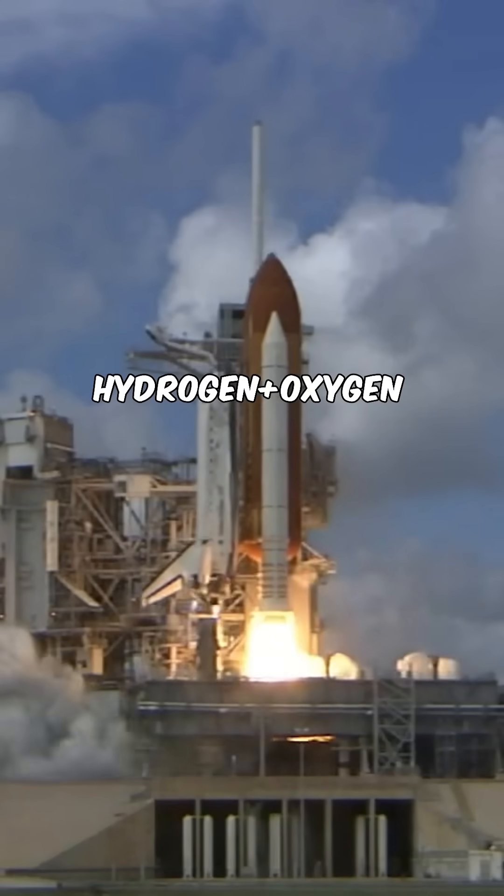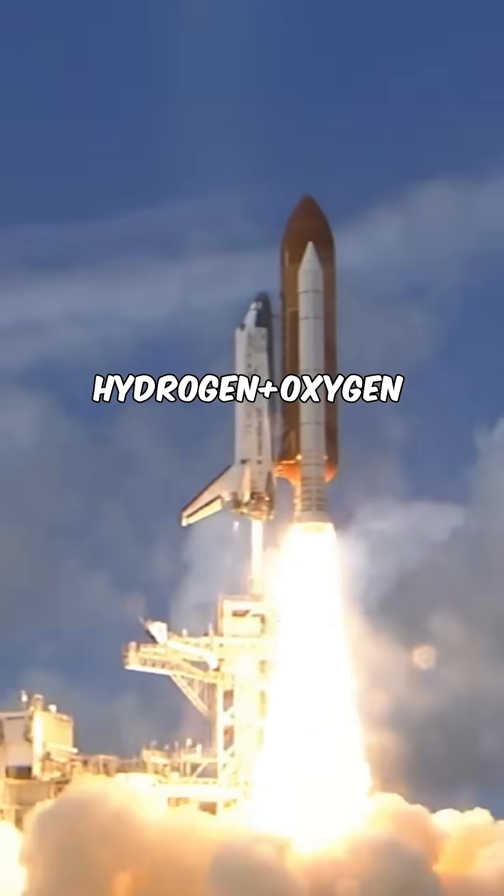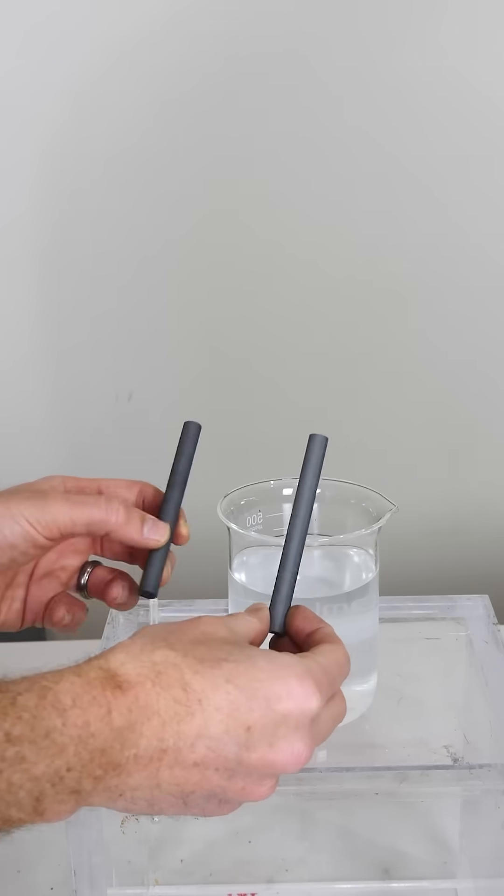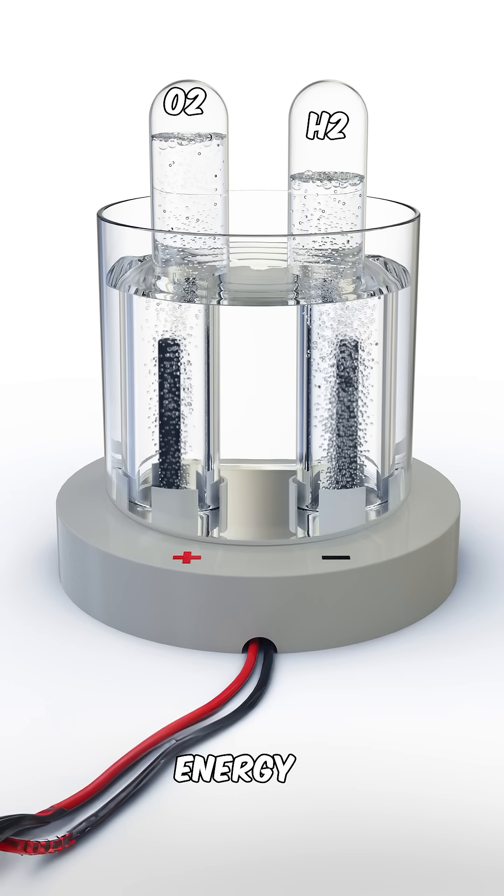When you burn hydrogen with pure oxygen, you get an explosion with fire and heat, and you make water. But you can also do the opposite and take pure water and put in a bunch of energy to make oxygen and hydrogen again.